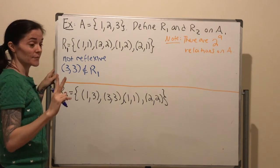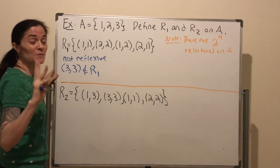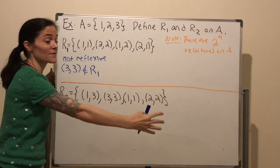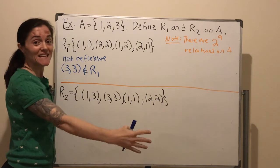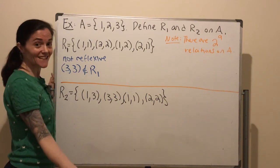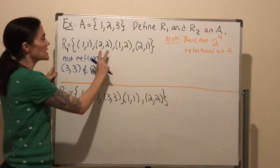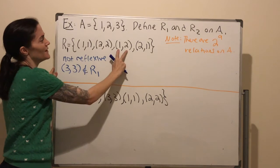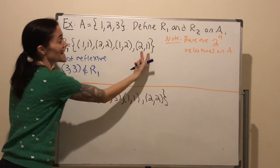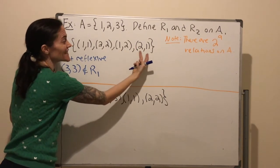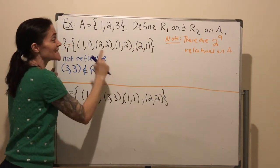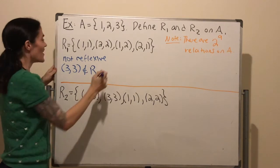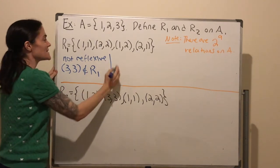Now, symmetric. This we can see a little bit easier when we have all of the elements of the relation listed like this. You flip a pair — it's in the relation. Take another, flip it — it's in the relation. So this is wonderful: R1 is symmetric.